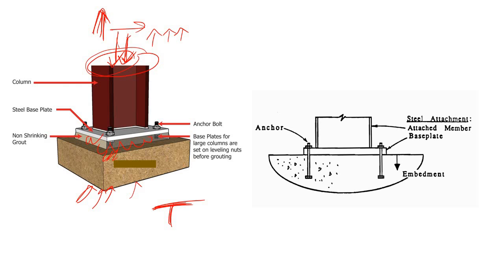The anchor bolt carries and transfers the tensile force from the superstructure to the pedestal. The same is true for shear force: if there is no anchor bolt, the shear force tends to displace the column from the pedestal. So all failures in anchor bolt actually occur due to tensile force and shear force — there is no question of compressive force.